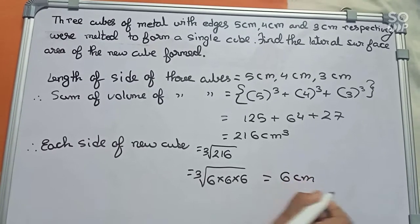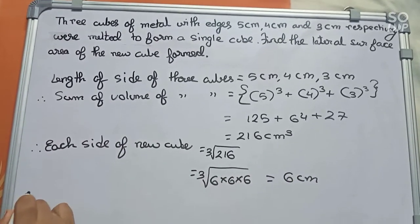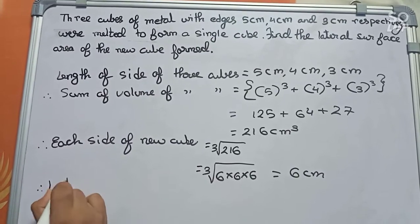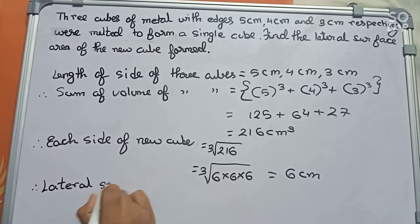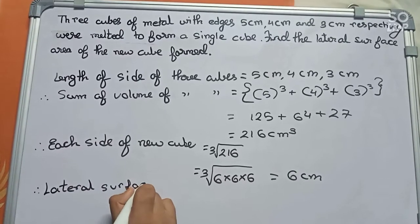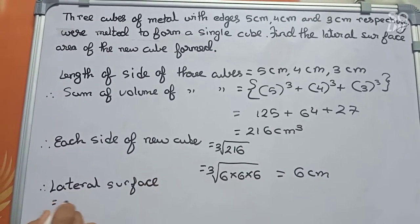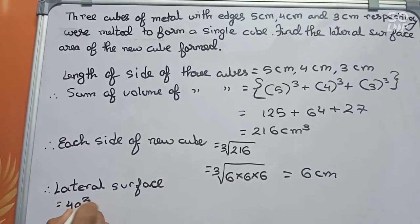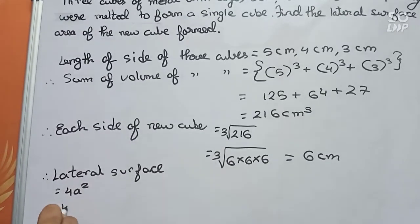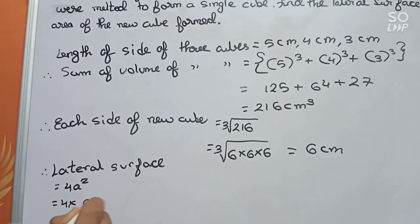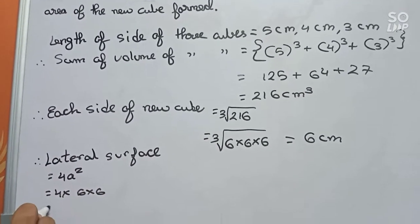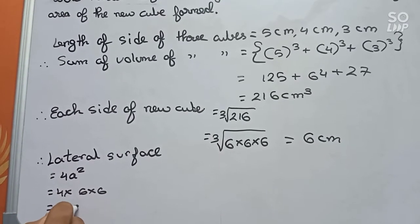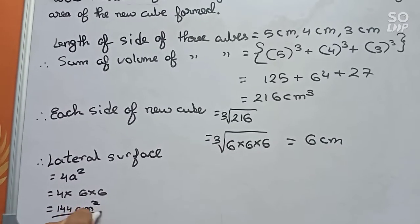Now we have to find the lateral surface area. Therefore, lateral surface equals to - the formula is 4 s square - so it will become 4 into 6 into 6, which is 144 centimeter square. So this is our final answer.